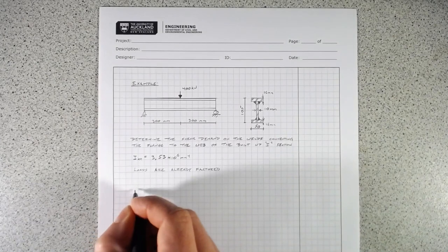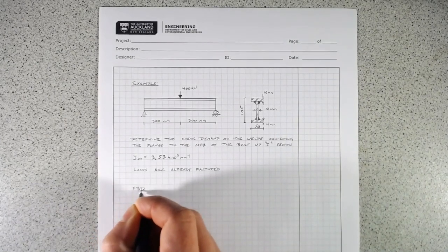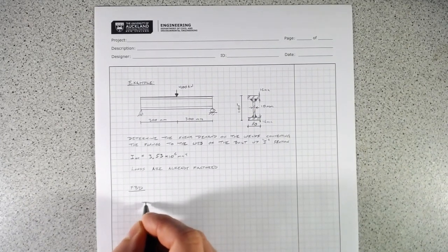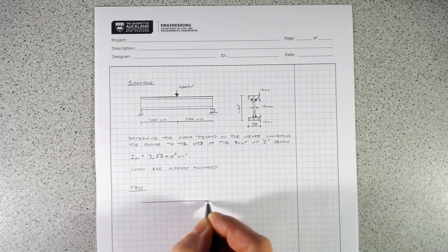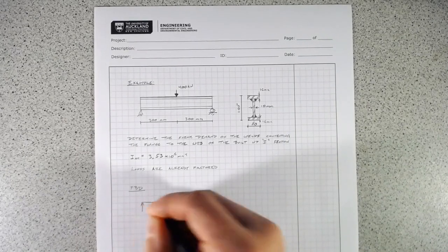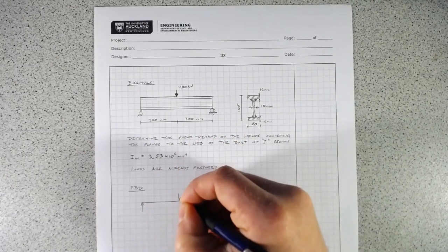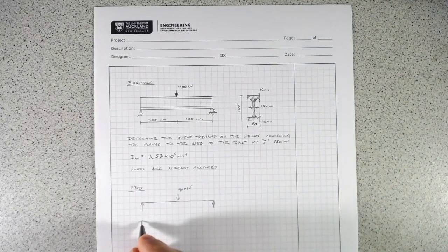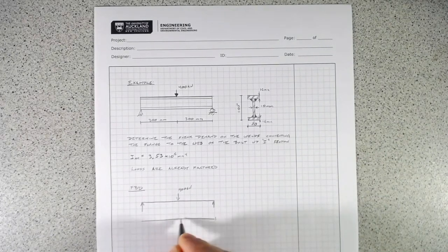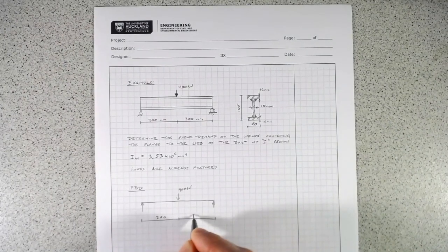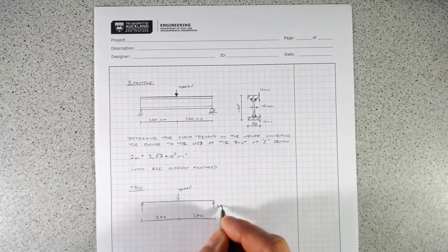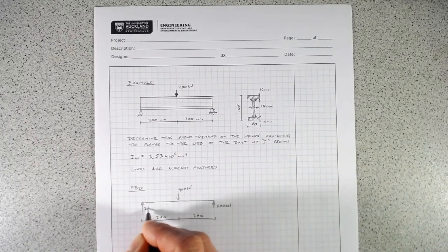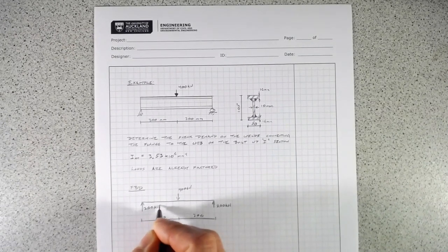The first thing we want to do is draw a free body diagram. We'll put our loads on it. It's simply supported. If we know that's 400 kilonewtons, 300 millimeters, 300 millimeters, we know from elementary statics that our support forces are going to be 200 kilonewtons each.